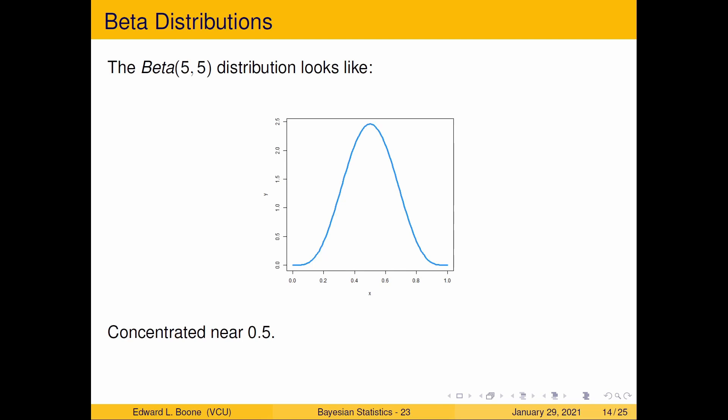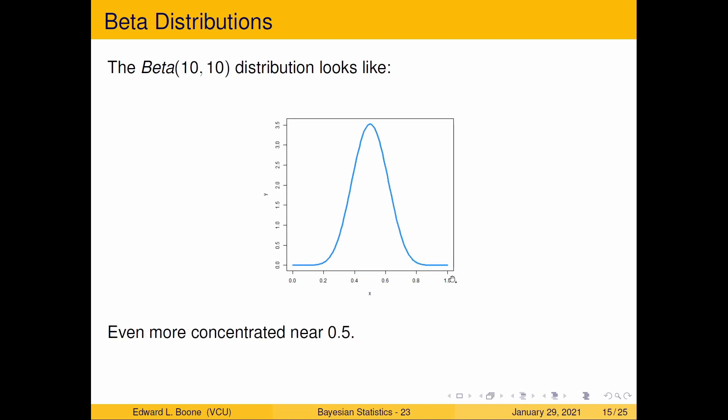Here's a beta(5,5) concentrated near a half. Looks very different than a (2,2) in the sense that these are flattened out here and what we would call the tails. Go to a (10,10)—gets a little bit flatter, more flat, still concentrated, the height is around 0.5. A (100,100)—nobody said they had to be small numbers.